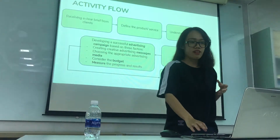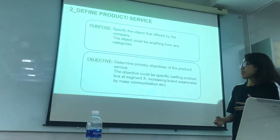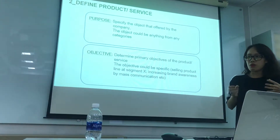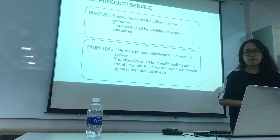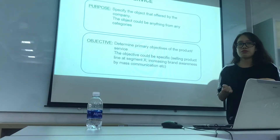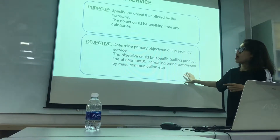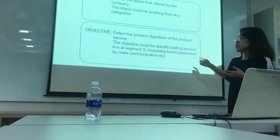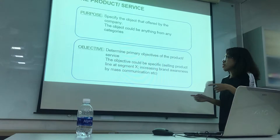We're going to start with step 2. Step 2 is to define the product and service. The purpose of this step is to specify the options offered by the company. Like when you receive a brief from a client, you need to know what you're going to do — what is the product or service. For example, you receive a brief from brand Comfort, but you will do the product Comfort Nature, so you have to define what your specific objective is. The goal of the product needs to be clear, like determining the primary objective — it could be selling the product to segment X, a young target audience, or something like that.